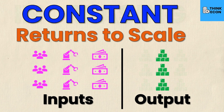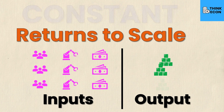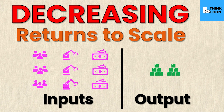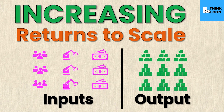To summarize: constant returns to scale is when I have an exactly proportional response — so if I triple my inputs then I triple my outputs. Decreasing returns to scale is when I triple my inputs but I have less than triple of my output; in this case triple inputs but only double the outputs. And then finally, increasing returns to scale — I could triple my inputs but I would have nine times my output, significantly more than the multiple that was applied to my inputs.